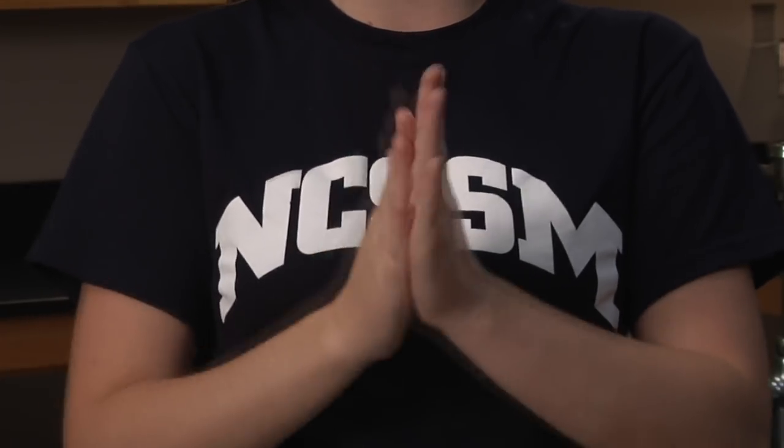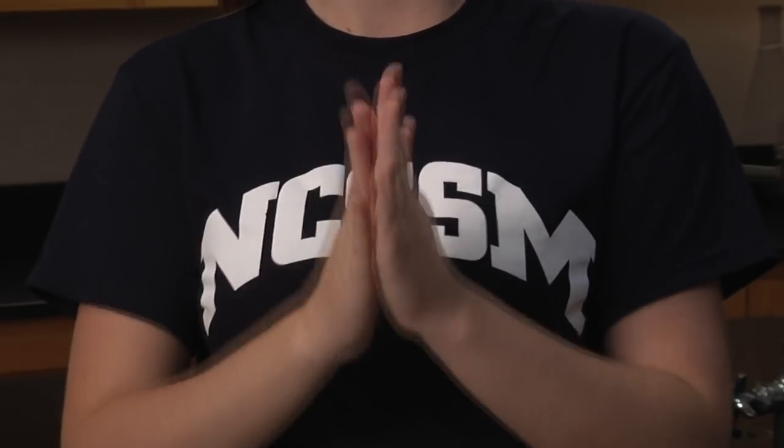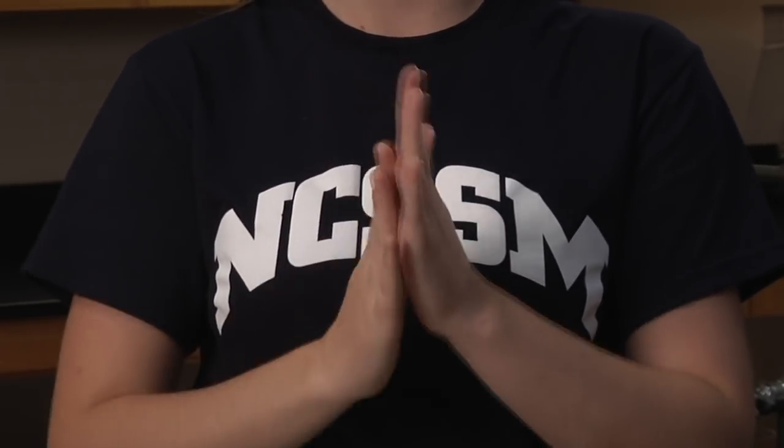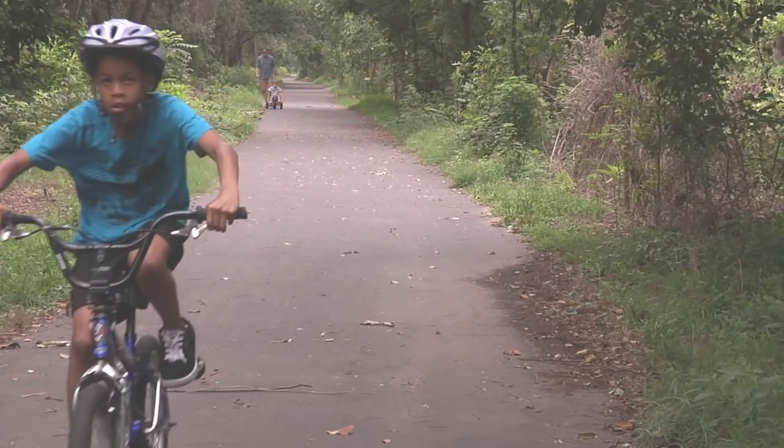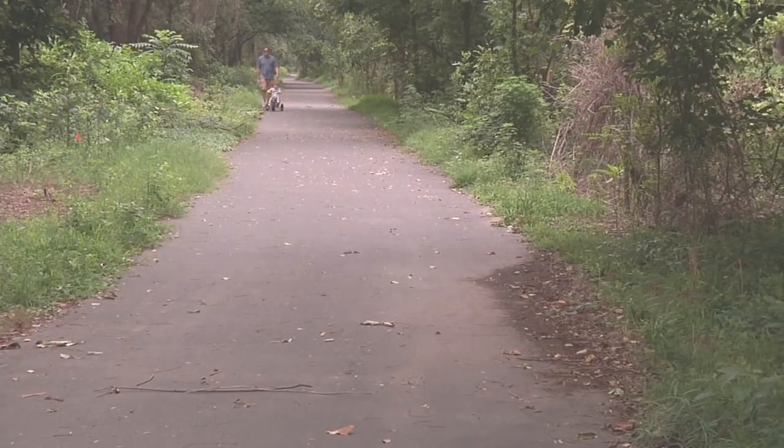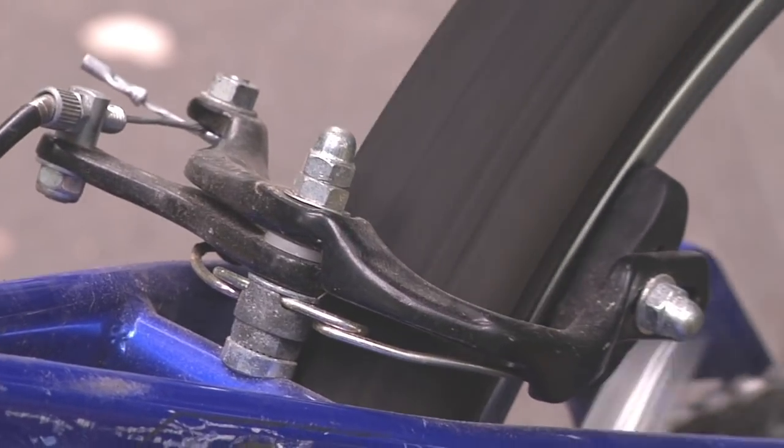The faster you rub your hands together, the more friction and heat you create. When you slow down, you create less friction and heat. Think of the brakes you use to stop your bicycle. The friction of the brakes on the wheels stops them from turning and counteracts the inertia, moving the bike and rider forward.